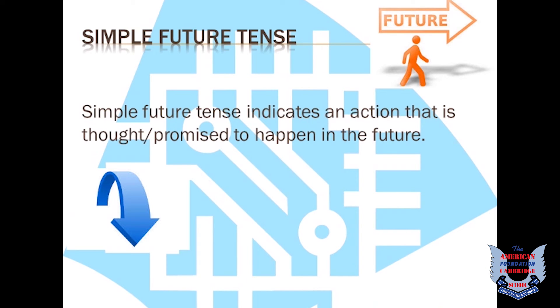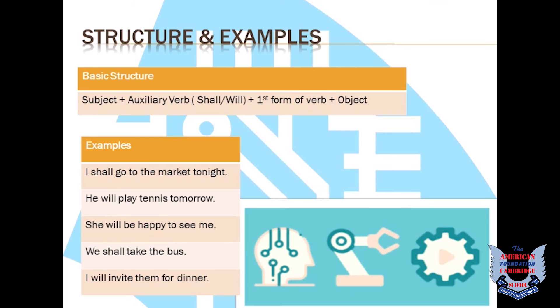The simple future tense indicates an action that is thought or promised to happen in the future. The structure of a simple future tense includes an auxiliary verb. Auxiliary verb is shall or will. Over here, we use the first form of verb.